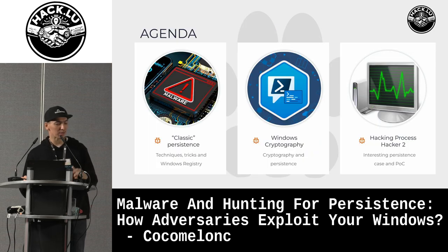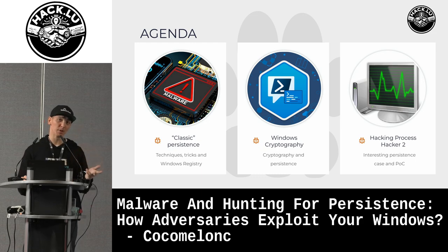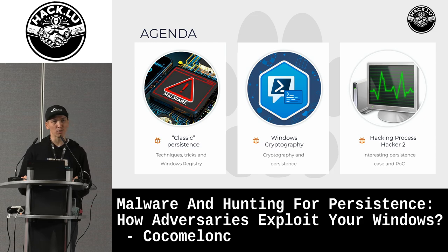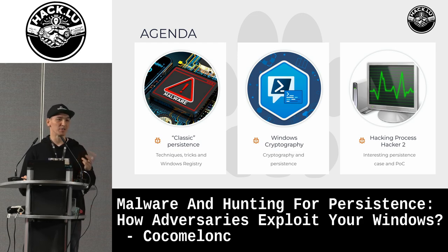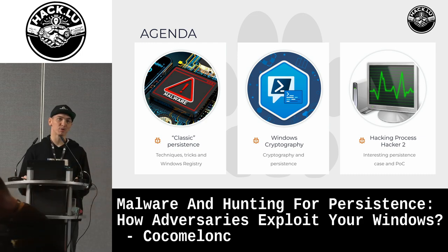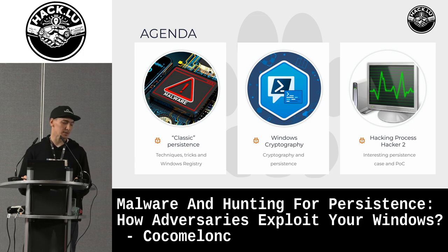A little bit of agenda. First of all, we will consider classic persistence tricks used by malware, APTs, and cybercriminals. The second one is how you can abuse Windows cryptography internals for persistence mechanisms. And the last one is how you can abuse ProcessHacker version 2 — a security bug that is fixed in version 3.